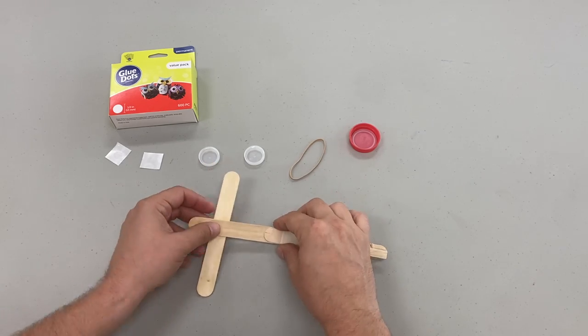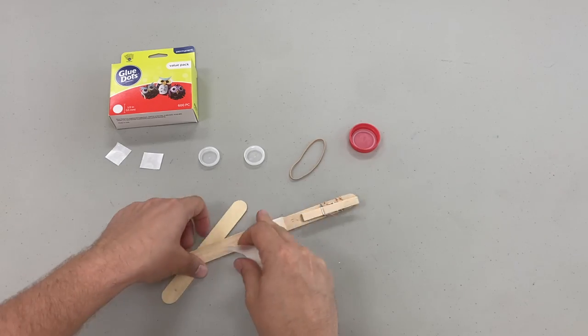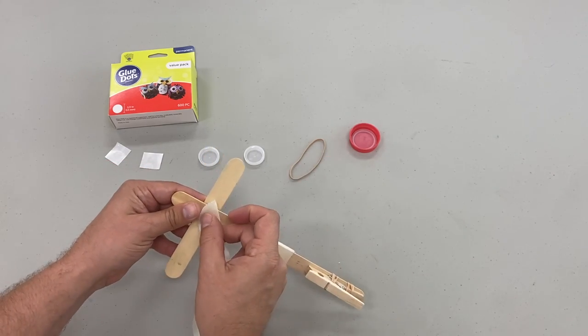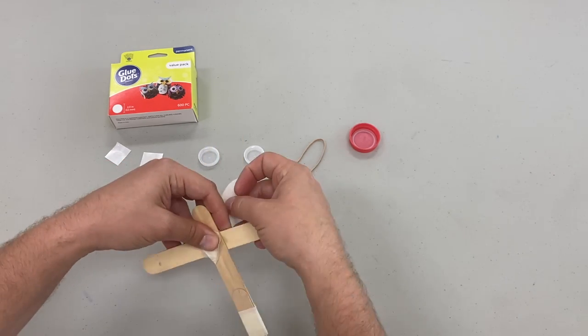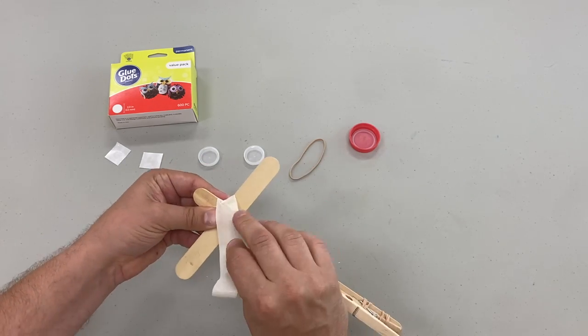We're now going to attach our third craft stick about a quarter of an inch from the top and make a T-shape. We're going to tape diagonally around it once or twice to really make sure that it holds on firmly.